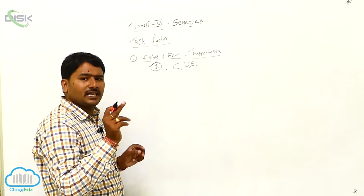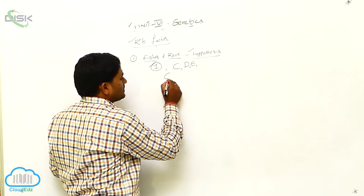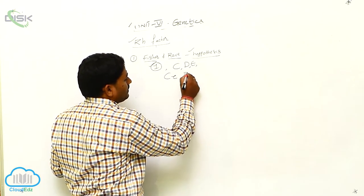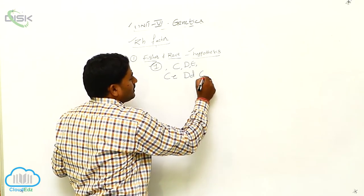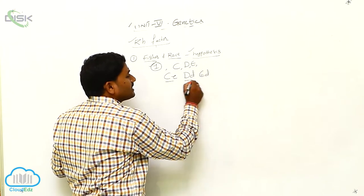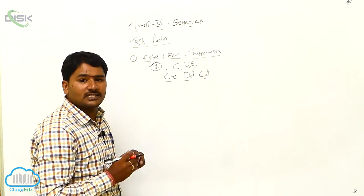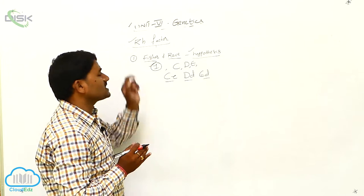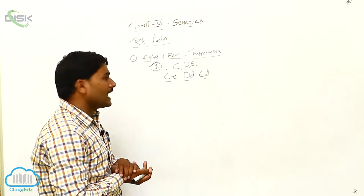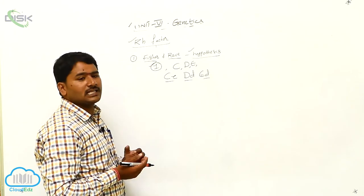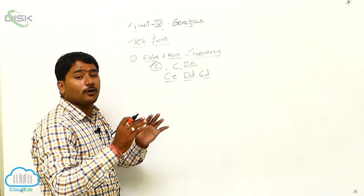Each gene has two alternative forms: C and c, D and d, E and e. So these are the three pairs of alleles responsible for the RH factor, and these three alleles form different types of combinations.